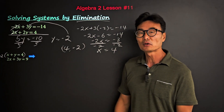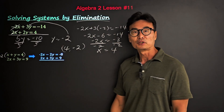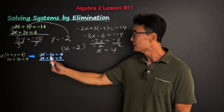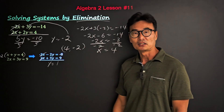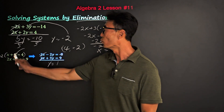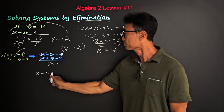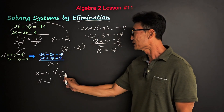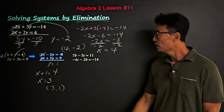Multiplying the first equation by negative 2 gives us negative 2x minus 2y equals negative 8. Now adding up and down, negative 2x and 2x cancel out. Negative 2y and 3y give us y. Negative 8 plus 9 equals 1, so y equals 1. Plugging 1 back into the first equation gives x equals 3. The final answer is x equals 3 and y equals 1.